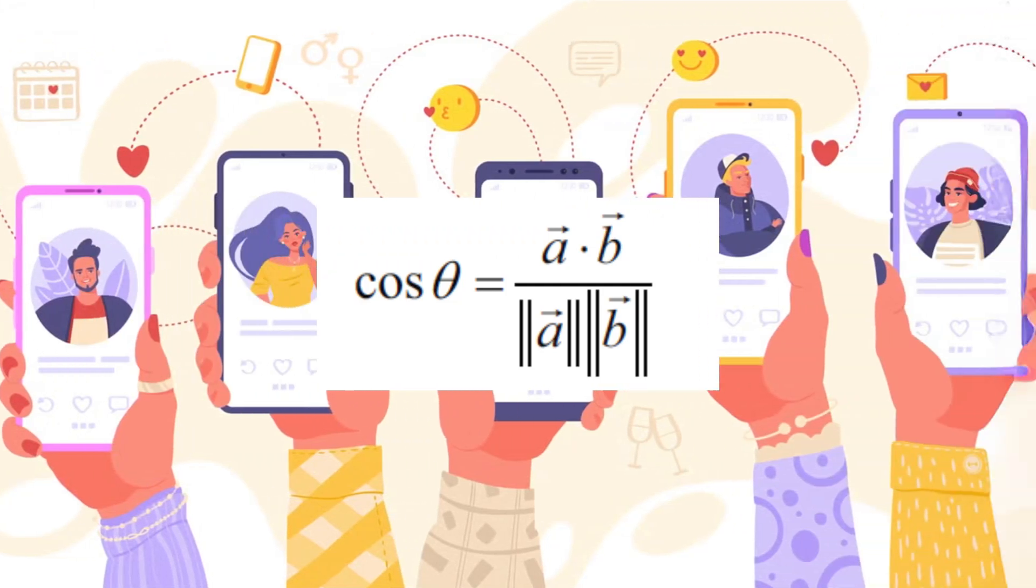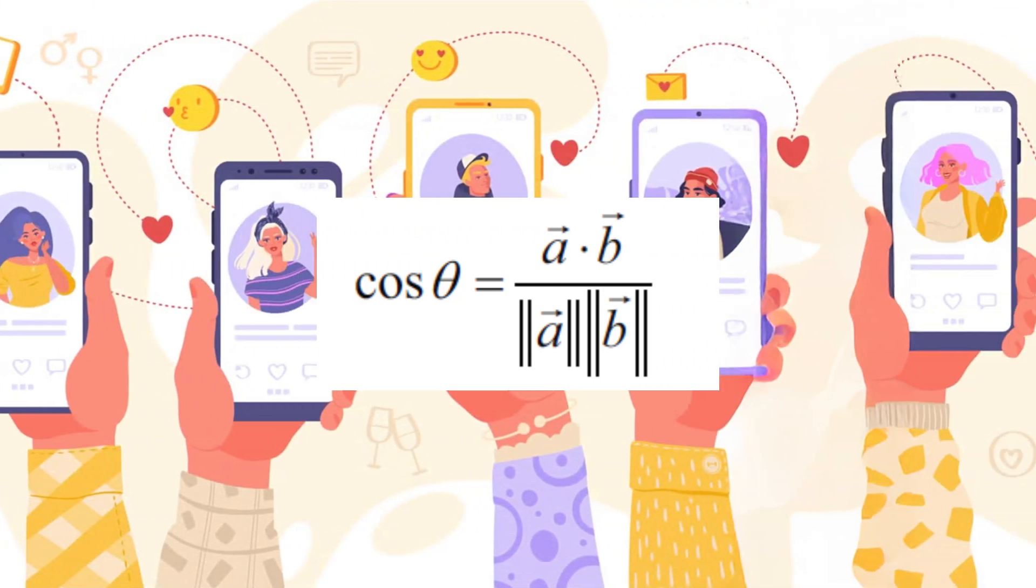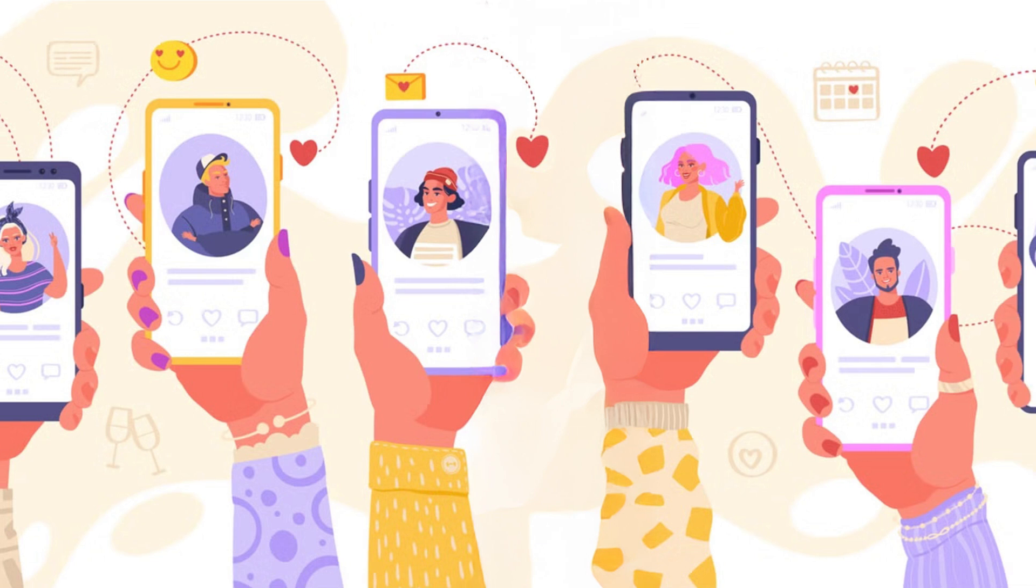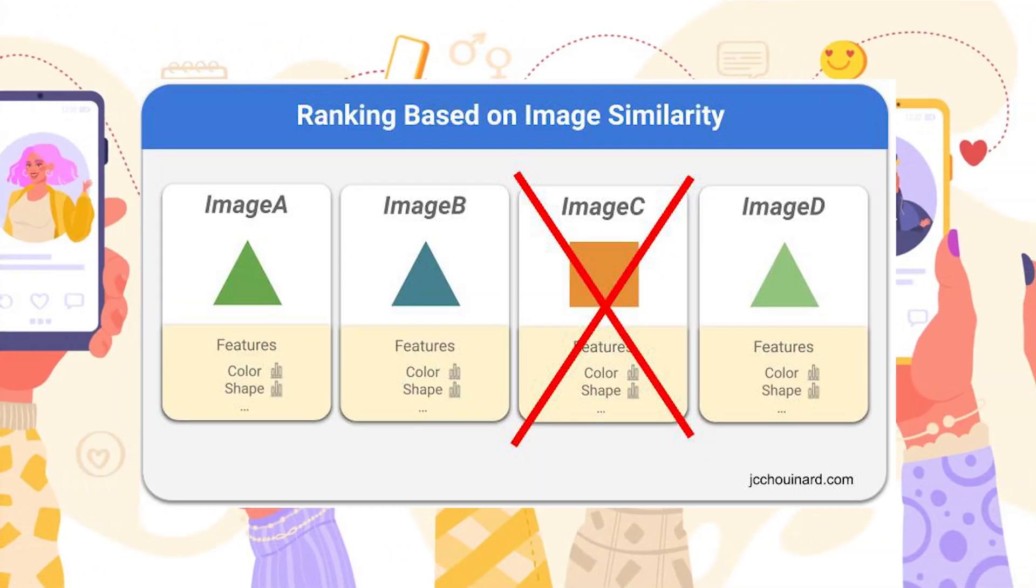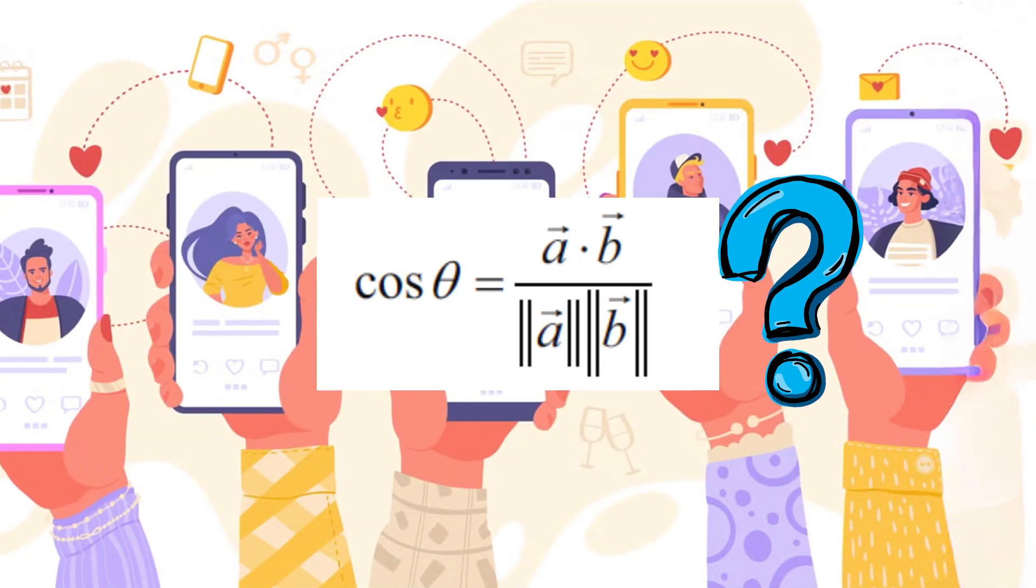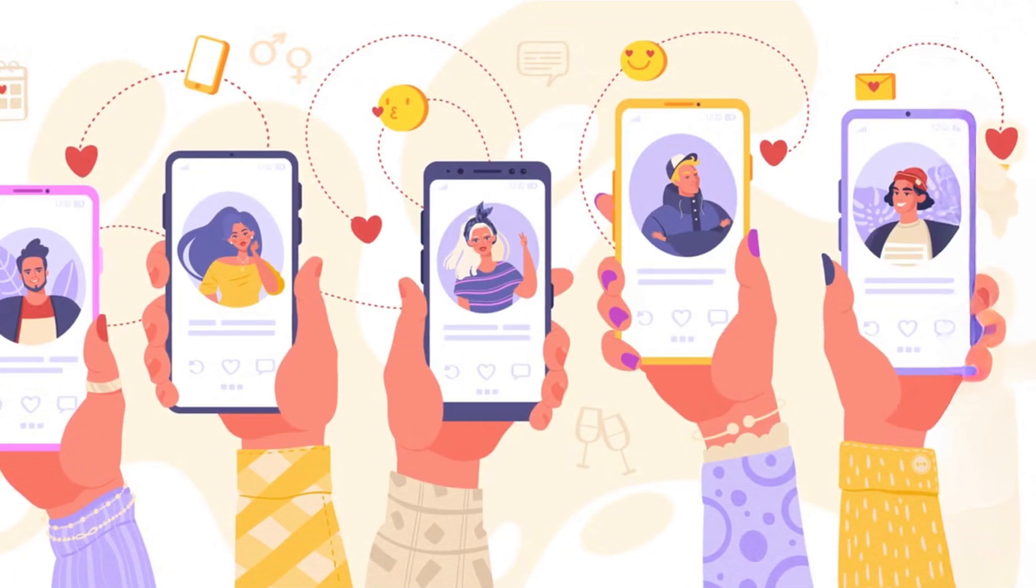The cosine ranking formula is a versatile tool in linear algebra. It has wide applications from text analysis to search engines, recommendation systems, and image comparison. So how was this formula derived? Well, here's the proof.